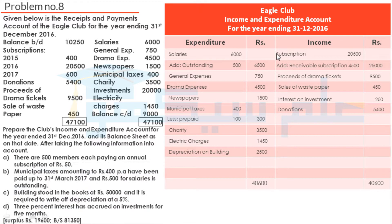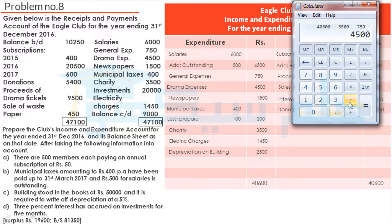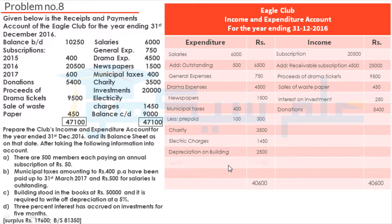Now we will see how much surplus there is. Income side total is Rs. 40,600. We deduct payments: salaries Rs. 6,500, general expenses Rs. 750, drama expenses Rs. 4,500, newspapers Rs. 1,500, municipal taxes Rs. 300, charity Rs. 3,500, electricity Rs. 1,450, depreciation Rs. 2,500 — totalling Rs. 21,000. We have excess of income over expenditure, and this is our surplus during the year Rs. 19,600.